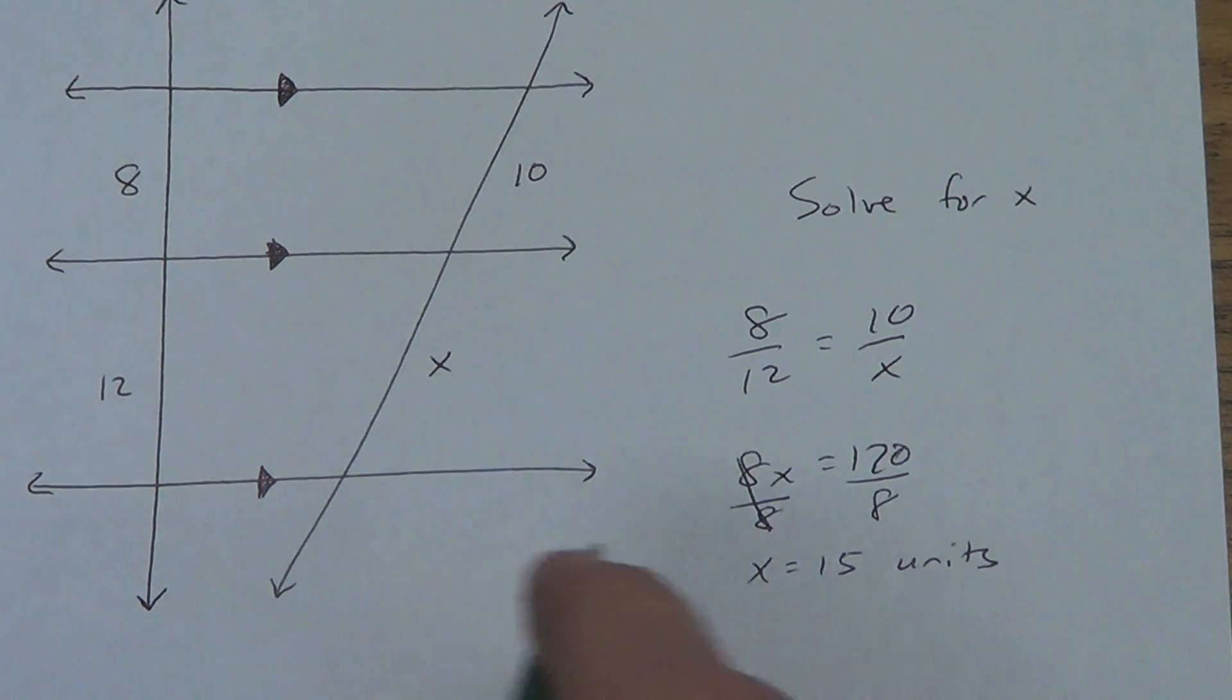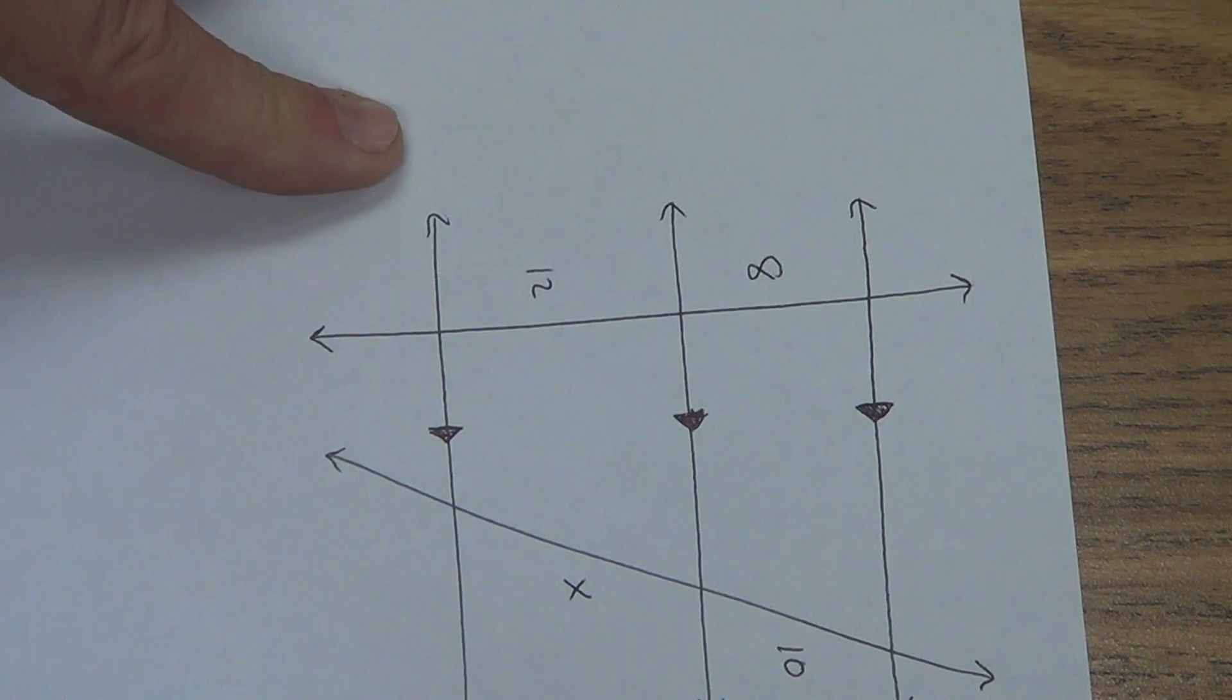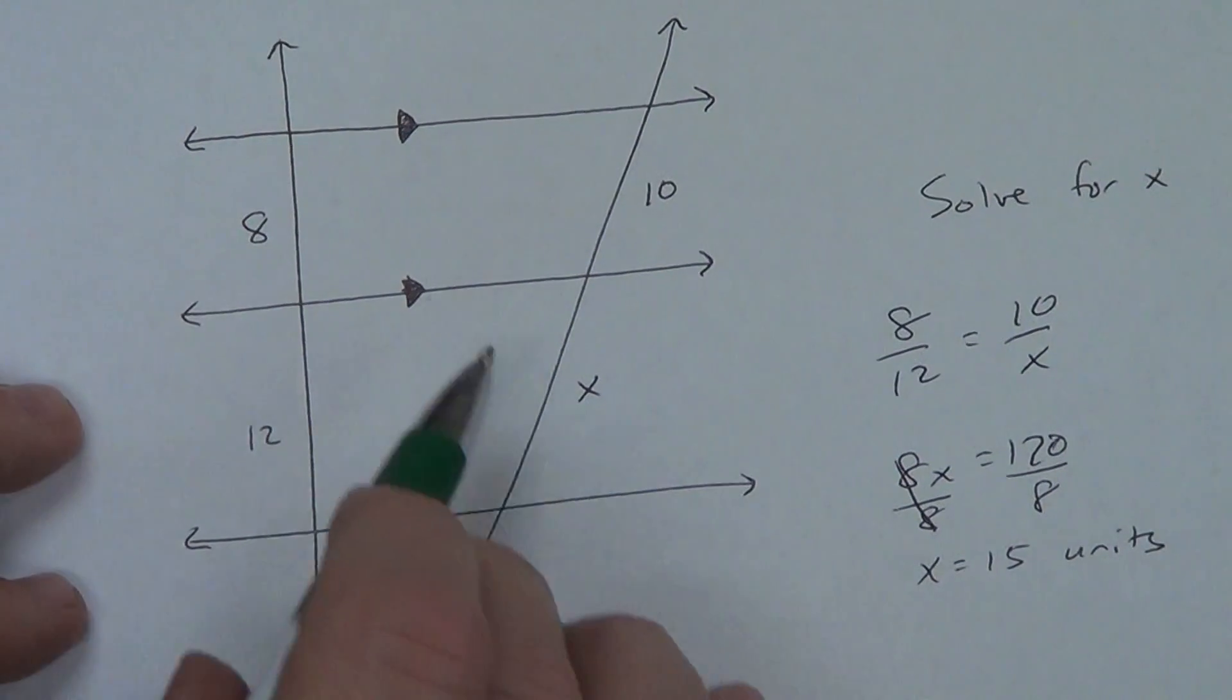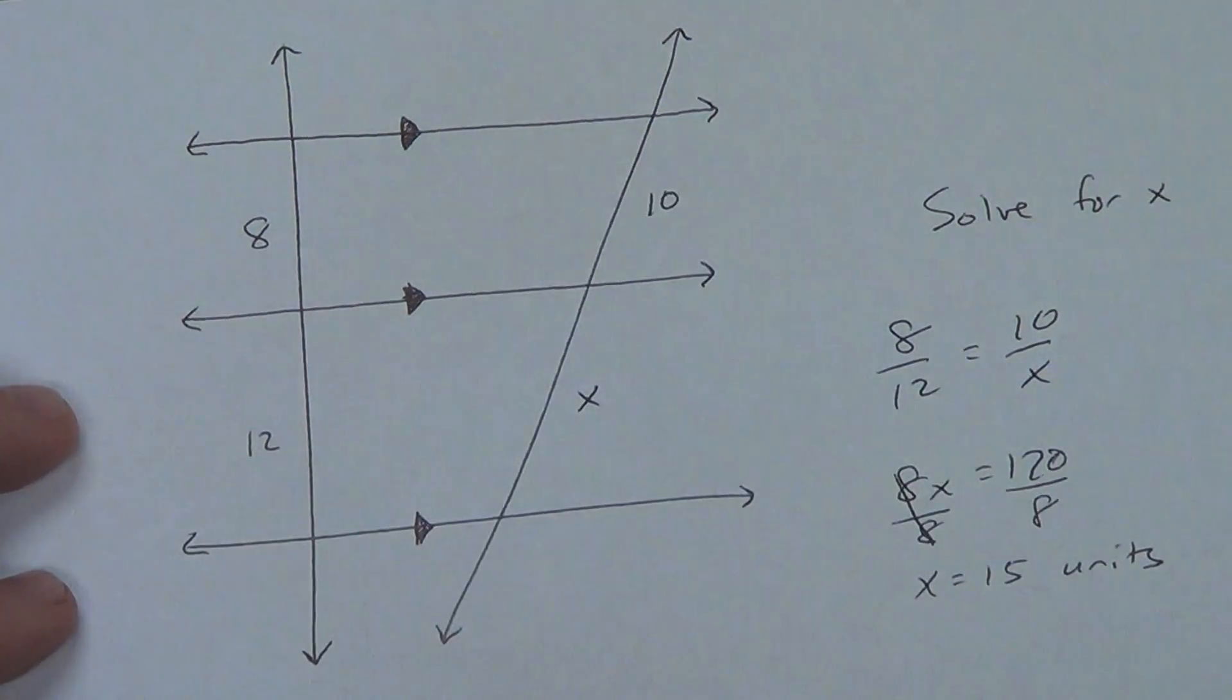Now, once again, you could have turned your paper and done 8 over 10, 12 over x. You'll get the same exact answer of 15. Cannot do 8 over x. You cannot do 10 over 12. You cannot work diagonally on these.